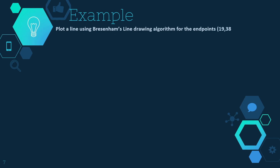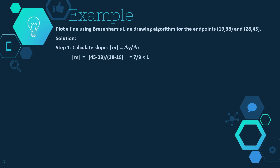Let's look at an example: plot a line using Bresenham's line drawing algorithm for the endpoints (19, 38) and (28, 45). The first step is to calculate the slope: delta y divided by delta x, which is 45 minus 38 divided by 28 minus 19, giving 7 divided by 9, which is less than 1. Since it is less than 1, we can use Bresenham's line drawing algorithm.